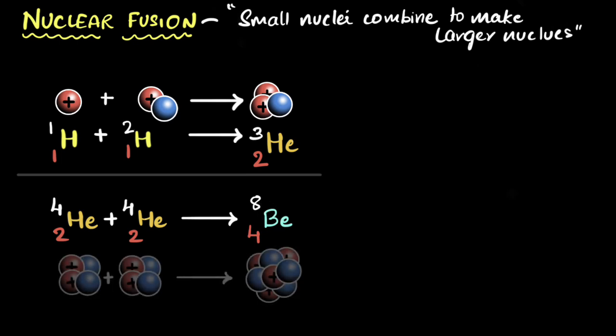So we'll get beryllium-8 as our heavier nucleus. And if you were to show the protons and neutrons, it will look somewhat like that. And you can again see lighter nuclei, smaller nuclei fuse together to form heavier, larger nucleus, nuclear fusion reaction.